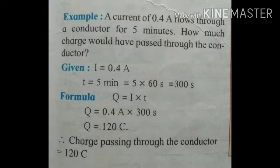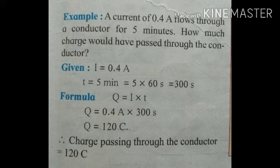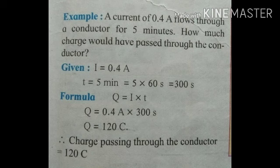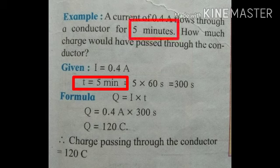Now let's solve a numerical problem based on this formula. The problem is: a current of 0.4 ampere flows through a conductor for 5 minutes. How much charge would have passed through the conductor? First we write given: current I = 0.4 ampere, and time T = 5 minutes.